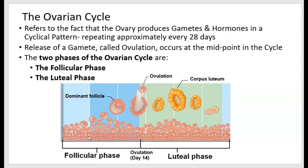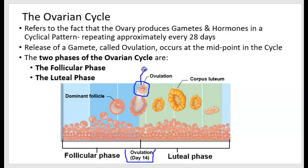The ovarian cycle refers to the fact that the ovary produces gametes and hormones in a cyclical pattern. This pattern repeats approximately every 28 days. The release of a gamete, known as ovulation, occurs at the midpoint of the cycle — shown here at day 14. An oocyte is being released from a group of cells called a follicle, and will leave the ovary entirely and go out into the abdominal pelvic cavity.